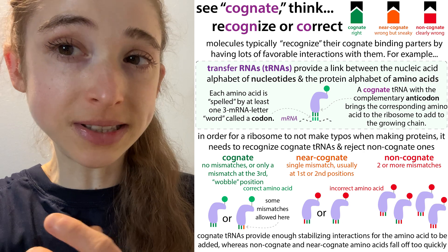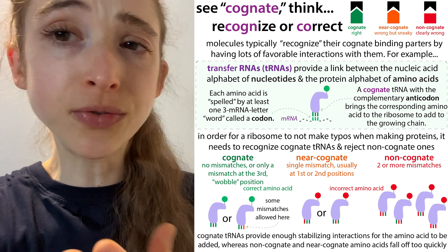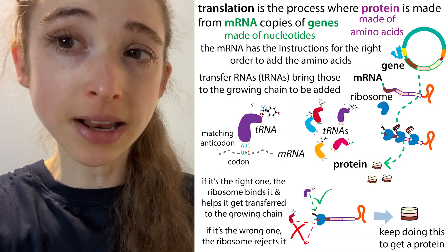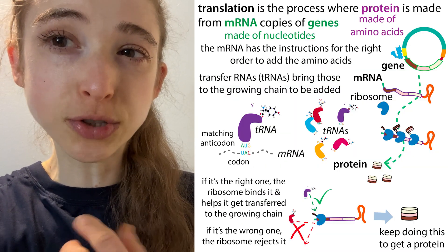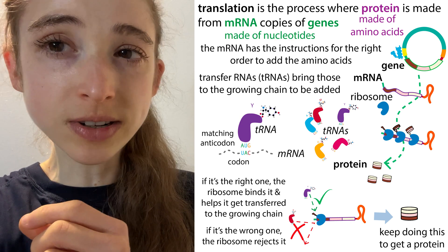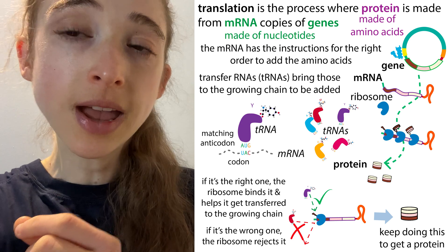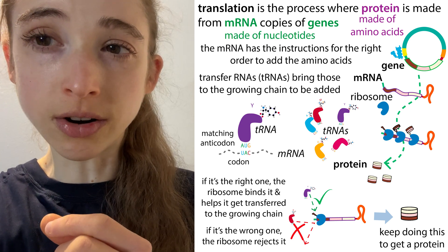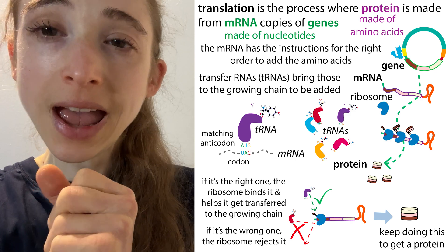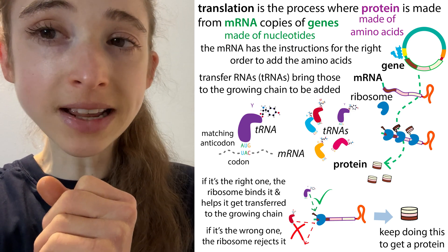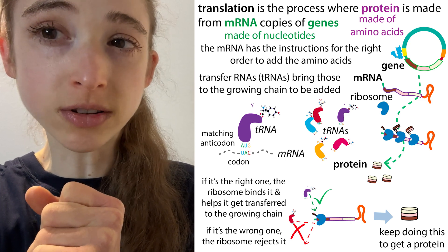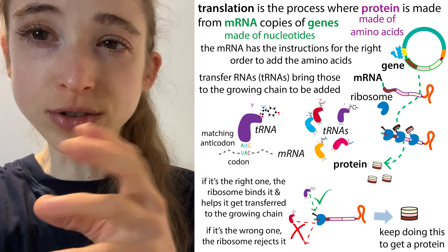Another place you'll probably see the word cognate used very frequently is in the context of translation, which is the process of making a protein by piecing together its individual amino acids — its building blocks. How this works is that there's a protein-making complex called the ribosome that travels along the messenger RNA, the recipe copy for making that protein. The order of amino acids to be added is specified in the sequence of that messenger RNA in the form of codons, which are these three-letter words or chunks.